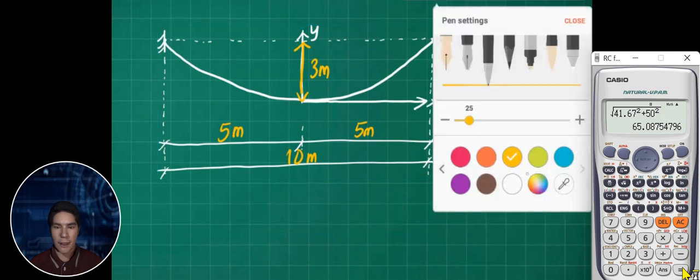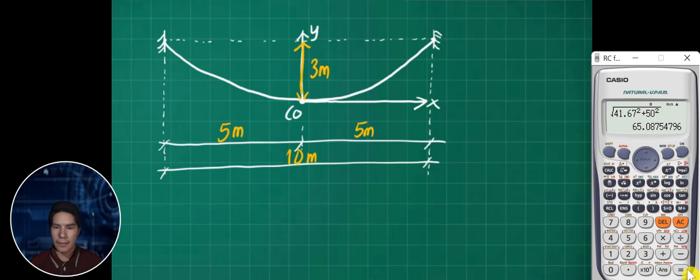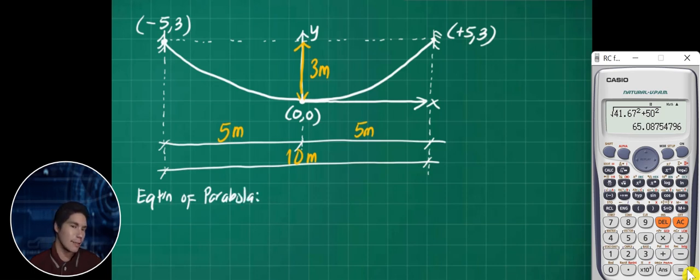I'll assume this is the origin, so zero, zero. Therefore, the point here is negative 5 and 3, and here is positive 5 and 3. Based on this, we can get the equation of the parabola.